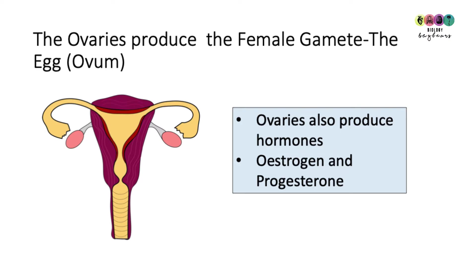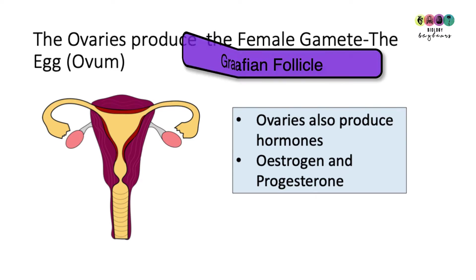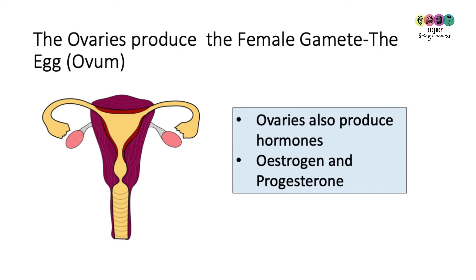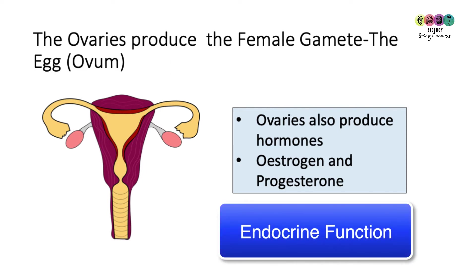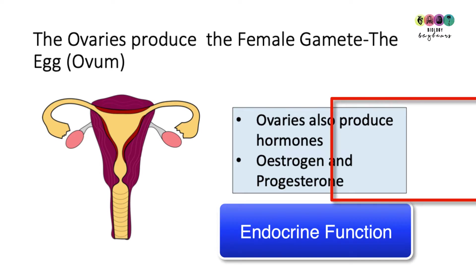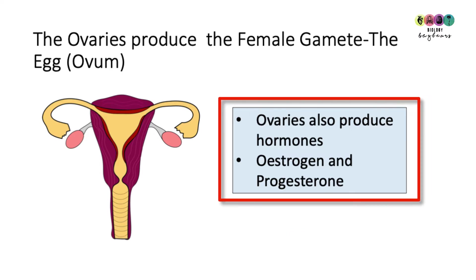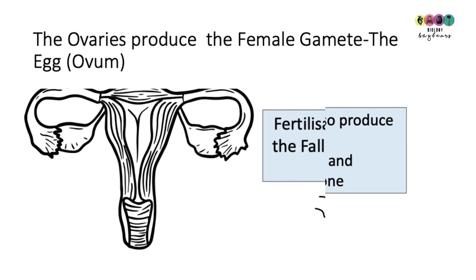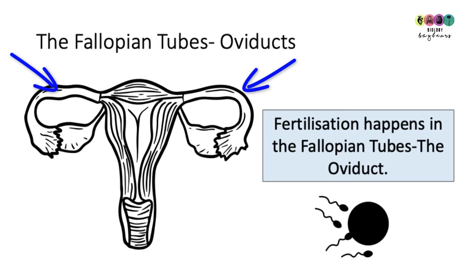The female gamete, the egg or ovum, is produced in the ovaries — specifically in the Graafian follicle. The ovaries also have an important endocrine function: they produce the hormones estrogen and progesterone.